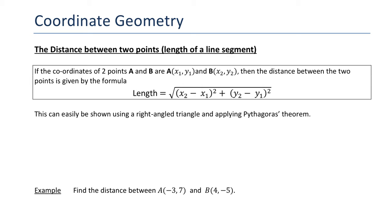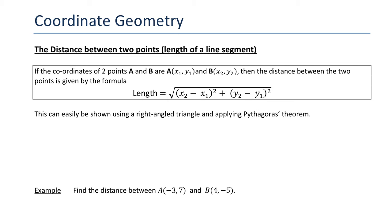The first thing we're going to look at is the distance between two points, or the length of a line segment. If one point is A which is (x₁, y₁) and the other point is B which is (x₂, y₂), then the distance between the two points is the square root of (x₂ minus x₁) squared plus (y₂ minus y₁) squared.